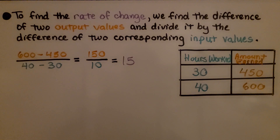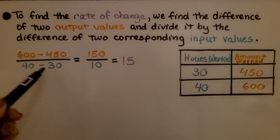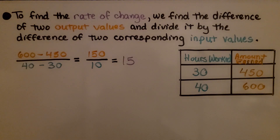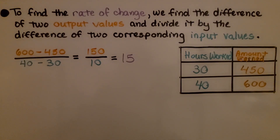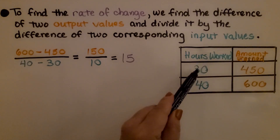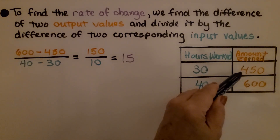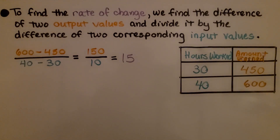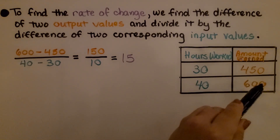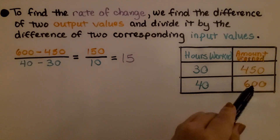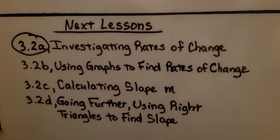To find the rate of change, we find the difference of two output values and divide it by the difference of two corresponding input values, then simplify. The most difficult part is determining which is the output and which is the input. The amount earned depends on the number of hours worked — if they work 30 hours they make $450, if they work 40 hours they make $600. So the earnings are the dependent variable. We're finished with part A and moving on to part B: using graphs to find rates of change.